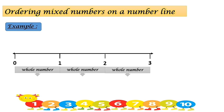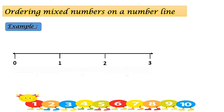Let us look at the example we are going to place on the number line: one and three quarters. The first thing we do is look at the whole number. The whole number is one — here is the number one on the number line. So the fraction will be placed between one and two.